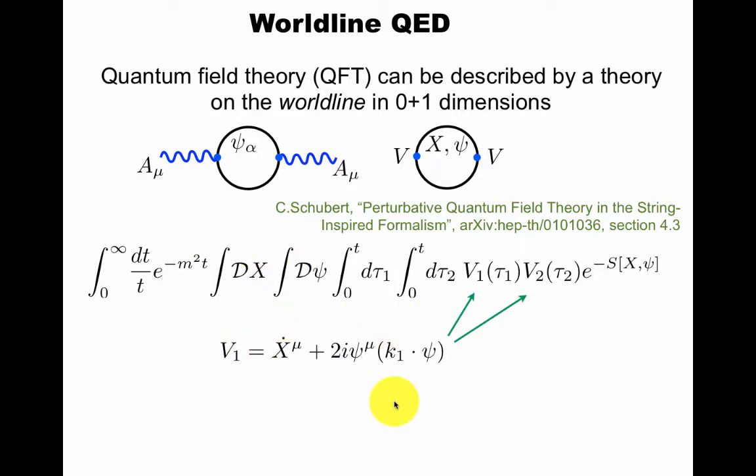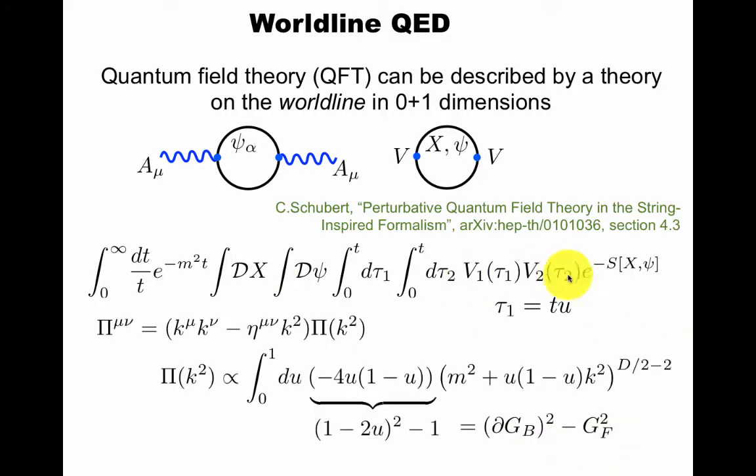The vertex operators are of this form. It's explained in this review why they have this form in QED. Free action, x squared and psi dot psi. With this functional integral and transforming to this variable u here, rescaling with t, and setting tau to zero, I get this vacuum polarization. The vacuum polarization is just like the usual expression. This combination we get turns out to be just the derivative of the bosonic Green's function on this worldline squared minus the fermionic Green's function squared, and the latter here is just one.